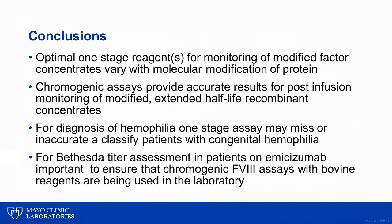In conclusion, options for monitoring new modified extended half-life recombinant factor concentrates may require one-stage assays with specific contact activators. Alternatively, chromogenic assays will provide more accurate post-infusion test results. Selected patients with mild hemophilia A may be missed with either the one-stage or the chromogenic assay, but more commonly the disease severity may be misclassified. In this situation, if a male patient with a clear bleeding disorder has a normal one-stage factor VIII activity assay, one should consider follow-up testing with the chromogenic factor VIII activity assay. Finally, Bethesda titer assessments in patients on emesizumab should always have testing performed using chromogenic factor VIII assay based on bovine reagents.